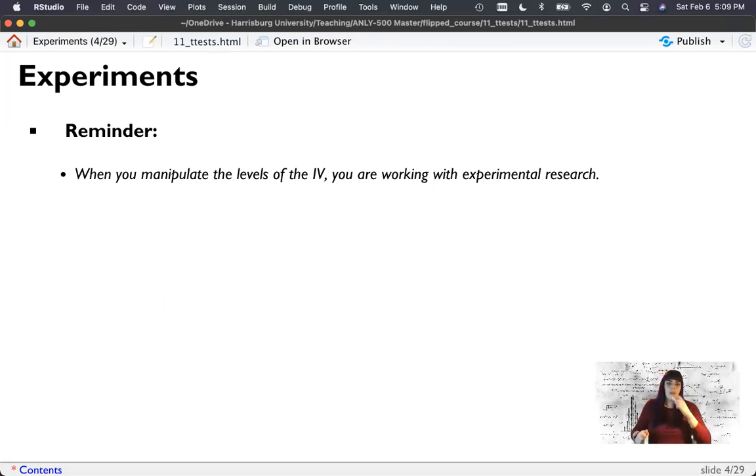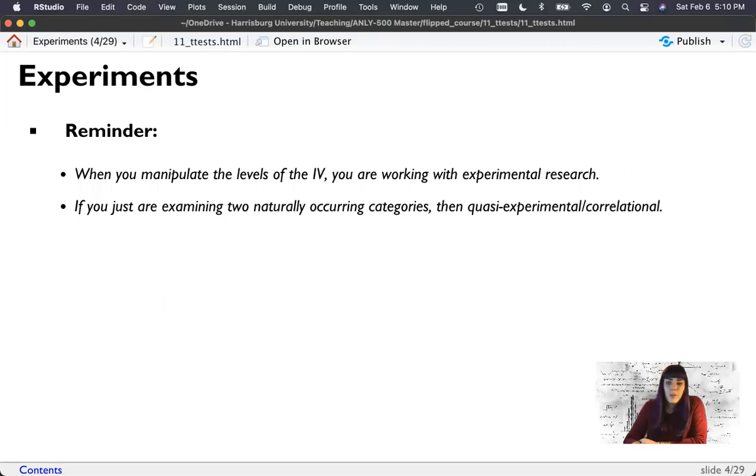A reminder. When you manipulate the levels or the groups in those IVs are two different things, you're doing an experiment. When you just measure them, like, let's say you decide to do men and women or smokers and not smokers, whatever, then this is either quasi-experimental or correlational. And so naturally occurring categories sometimes are called quasi-experimental.